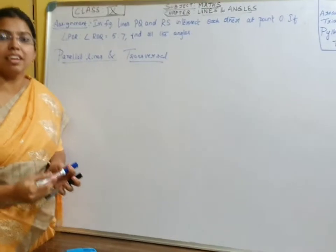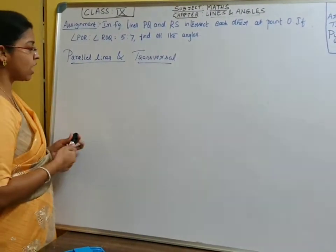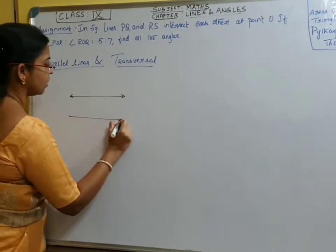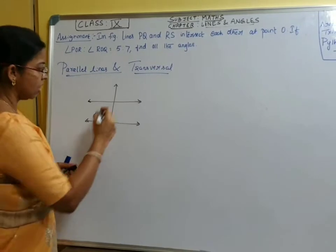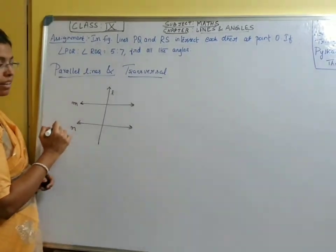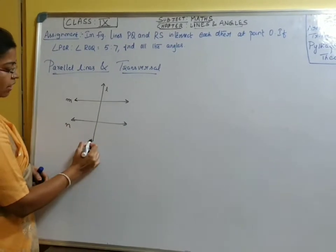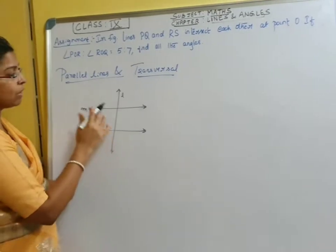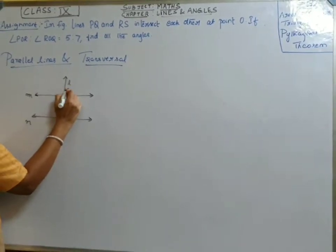In the previous class, that is in 8th grade itself, we have learnt what parallel lines and transversal are. What happens when a transversal intersects two parallel lines? Let's name the lines L, M, and N. M and N are two parallel lines, indicated with arrows. Line L intersects the two parallel lines. When a transversal intersects two parallel lines, we can see these angles form.